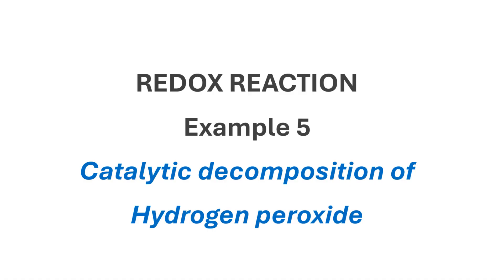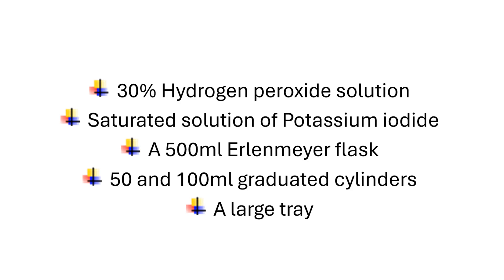To perform this experiment, you will need the following: a 30% hydrogen peroxide solution, a saturated solution of potassium iodide, a 500 ml Erlenmeyer flask, a 50 and 100 ml graduated cylinder, and a large tray.